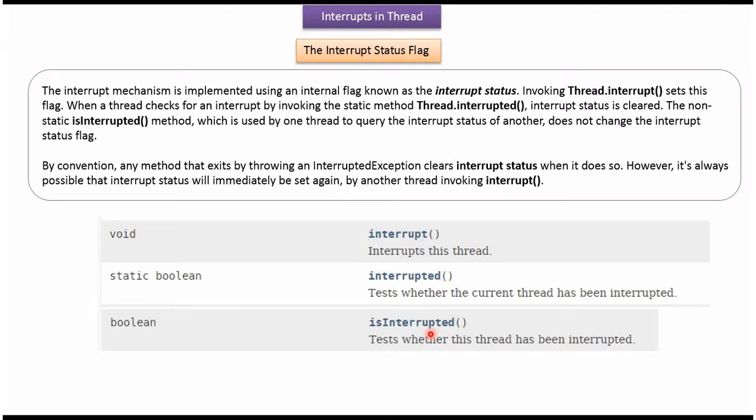Using the isInterrupted method, we can check whether the currently running thread has been interrupted or not. But this method won't clear the interrupt status flag. And this is about interrupts in thread, and thanks for watching.